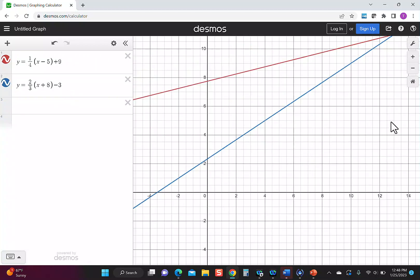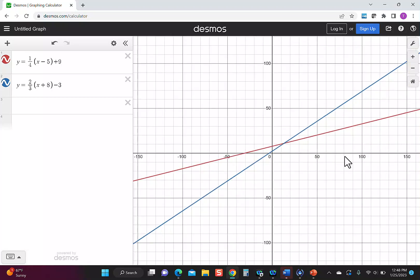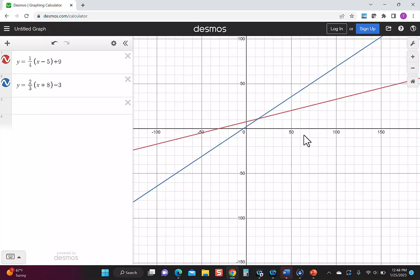Since I don't see where it intersects right now, I can either zoom in and out or just move my screen around until I find it. And then when you tap anywhere on the graphs, it will show you the intersection point.